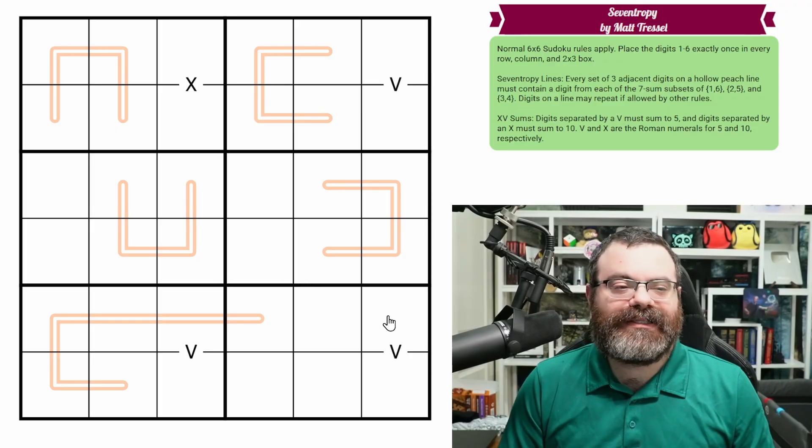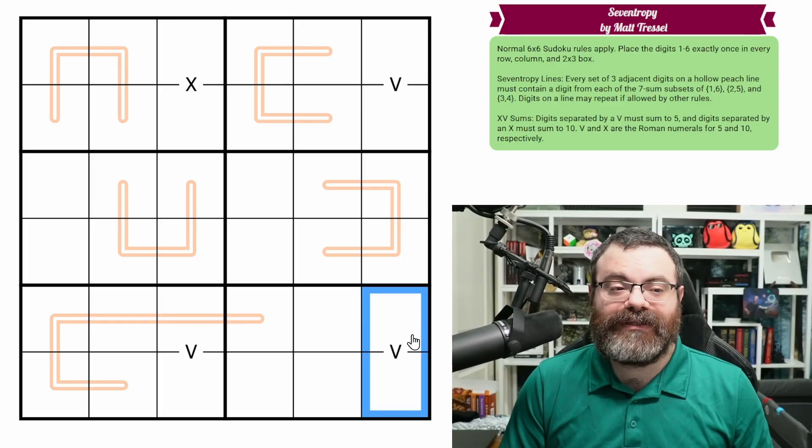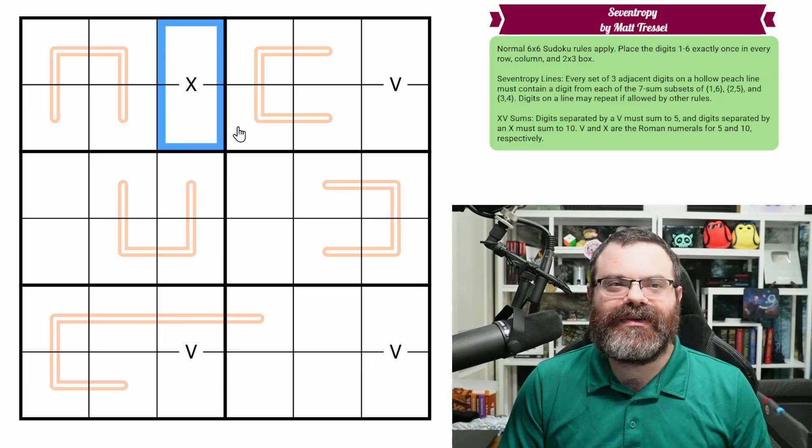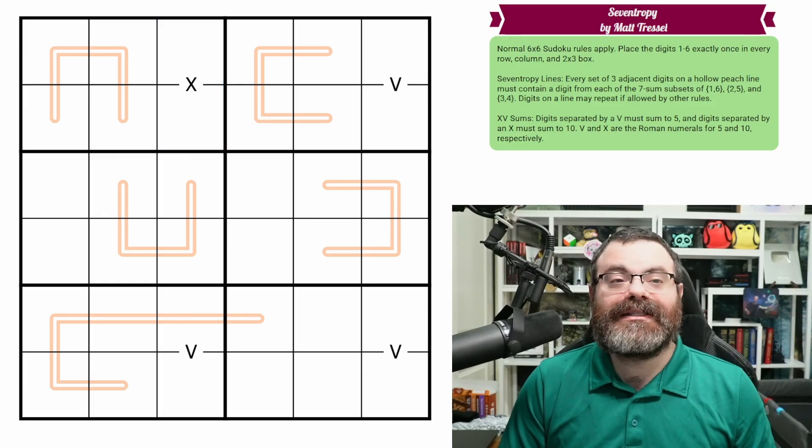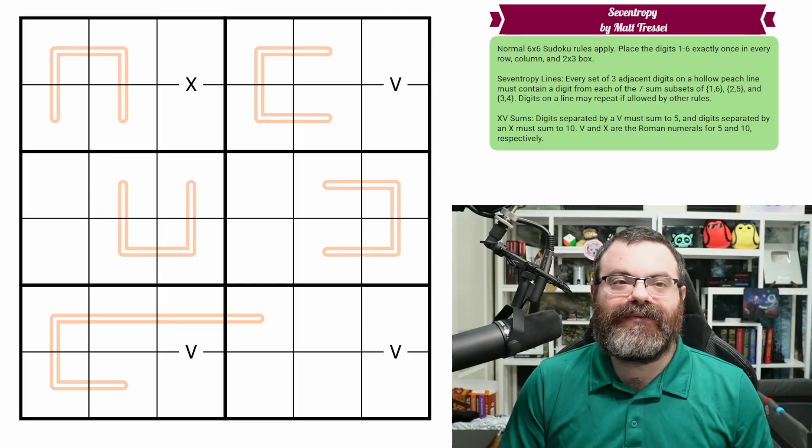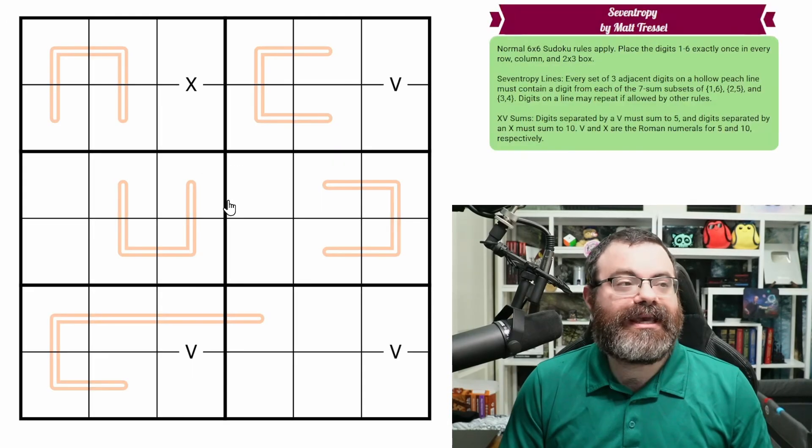We also have our x's and v's. V is the Roman numeral for 5, so these 2 add to 5. It tells us the sum of the touching digits. And the x, that's the Roman numeral for 10, so they sum to 10. And that's it, those are the rules. There's a link in the description if you'd like to try the puzzle yourself. And I'm going to get started right now.